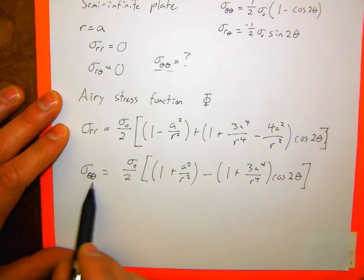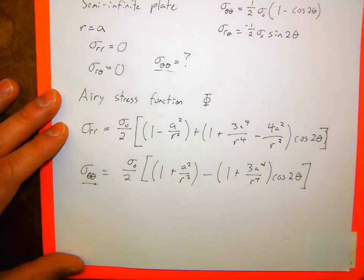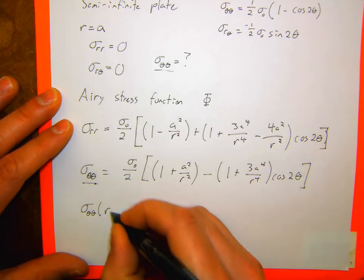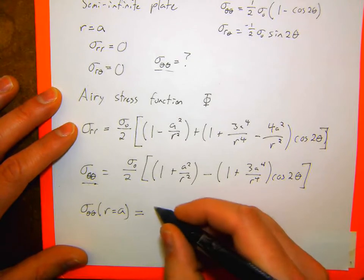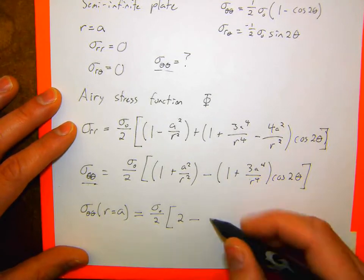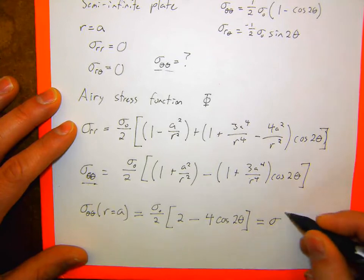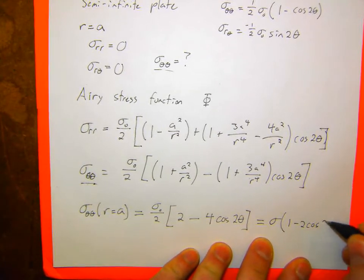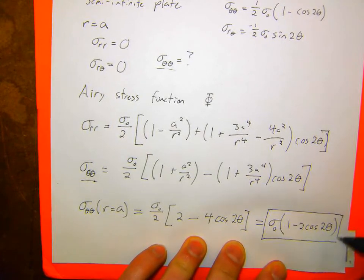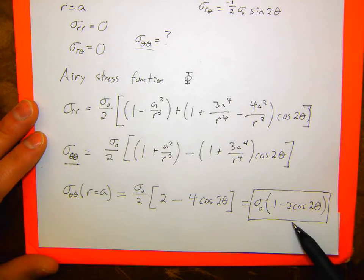The important term is sigma_theta_theta, the hoop stress. What we want to know specifically is what sigma_theta_theta is at the edge of the circle. Plugging in r = a, we get sigma_theta_theta = (sigma_naught/2)(1+1) − (sigma_naught/2)(1+3)cos 2θ, which simplifies to sigma_naught(1 − 2cos 2θ). This is our big important result — the hoop stress along the edge of the circle, varying sinusoidally around it.